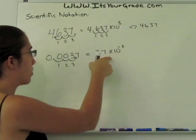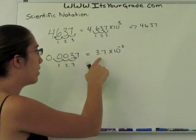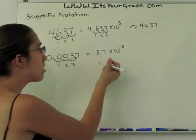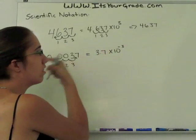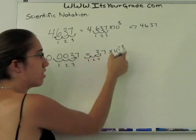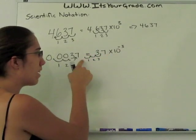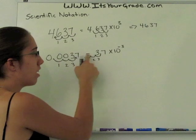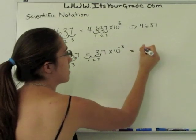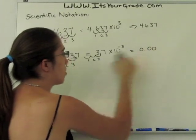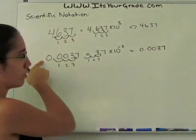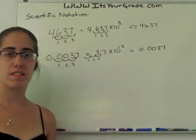Here, we have a negative exponent, so that means we want to have a number that's less than 1. So we're going to have to move the decimal to the left — 1, 2, 3 places because of the negative 3. And now these two places don't have anything in them, so we have to fill them in with a 0. So you get 0.0037, which is what we started with. And that's all there is to scientific notation.